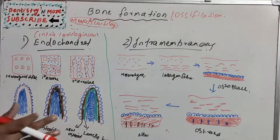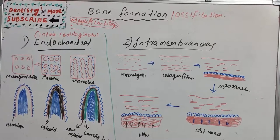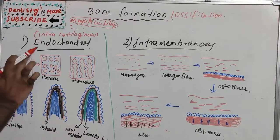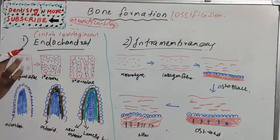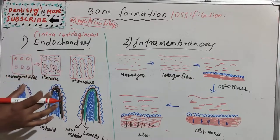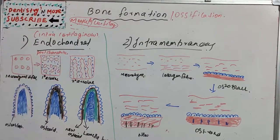In intramembranous formation, there is no such template or foundation. Now for the steps of endochondral bone formation: it starts with mesenchymal cells becoming condensed at the site of future bone formation. Some mesenchymal cells differentiate into chondroblasts, which lay down hyaline cartilage. This cartilage is surrounded by a membrane called the perichondrium, which is highly vascular and contains osteogenic cells from which the future bone develops.